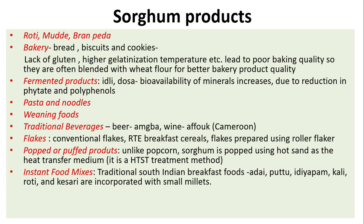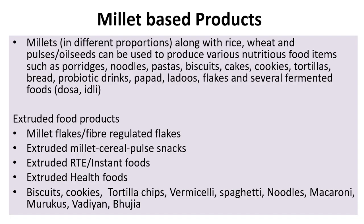Flakes are conventional ready-to-eat breakfast cereals prepared using a roller flaker. Sorghum is popped using hot sand as the heat transfer medium — a HDST treatment method. Instant food mixes and traditional South Indian breakfast foods like adai, puttu, idiyappam, kali, roti, and cassadi are incorporated with small millets. Millet-based products: millets in different proportions along with rice, wheat, pulses, or oil seeds can produce various nutritious food items such as forages, noodles, pastas, biscuits, cakes, cookies, tortillas, bread, probiotic drinks, puffed flakes, and fermented foods like dosa and idli.